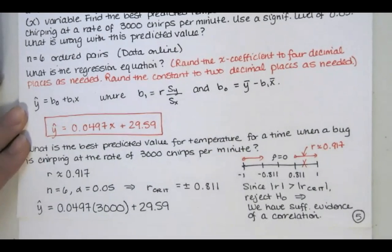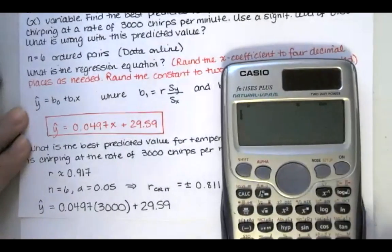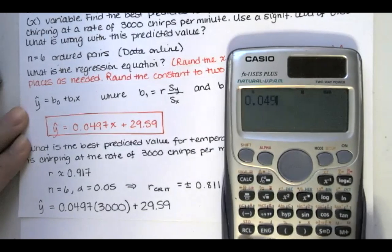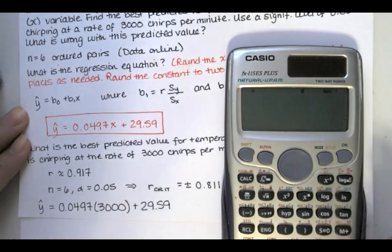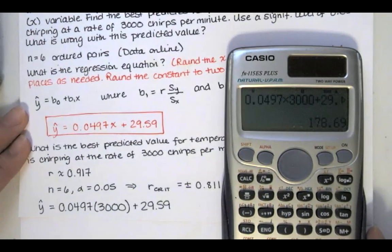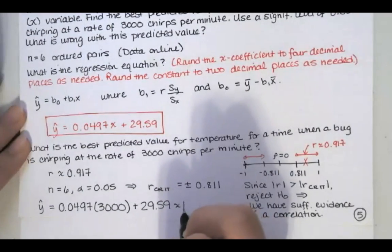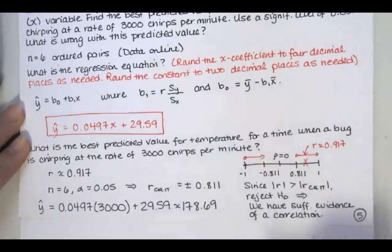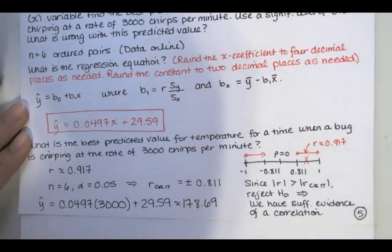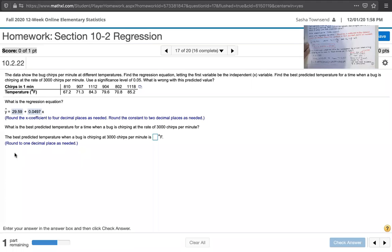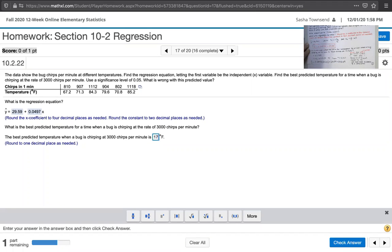And I'll use my calculator for this. And we get 78 point or 178.69 approximately. And we may need to round that to a different number of decimal places. So let's see what they want on MyLabStatistics. Okay, so the fine print here tells us to round to one decimal place as needed. So I'm going to round that to 178.7 degrees Fahrenheit.